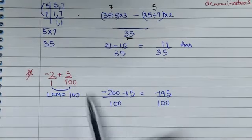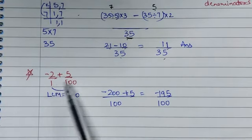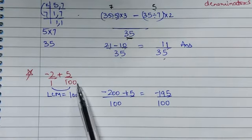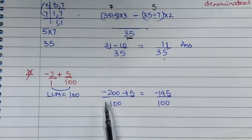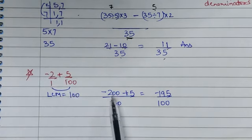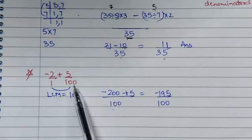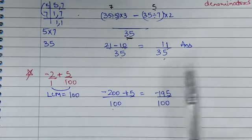Next: minus 2 upon 1 plus 5 upon 100. The denominators are not the same, so the LCM is 100. 100 divided by 1 is 100; 100 into 2 gives 200, with the negative sign. 100 divided by 100 is 1; 1 into 5 is 5. So we get minus 195 upon 100.